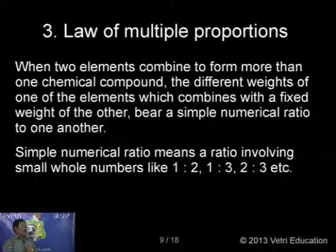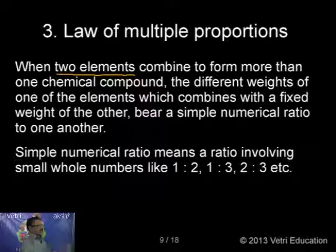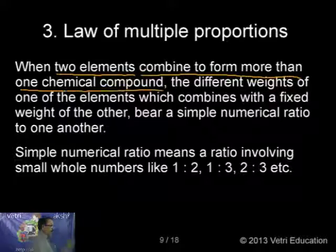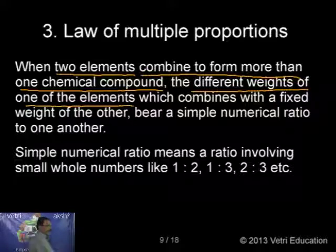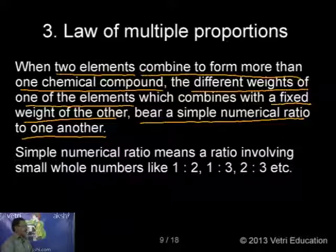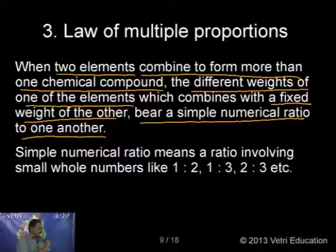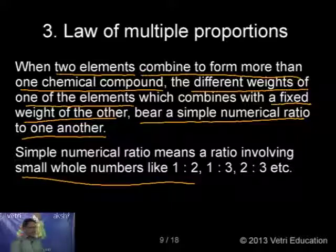The third law is the law of multiple proportions. The statement: when two elements combine to form more than one chemical compound, the different weights of one of the elements which combines with a fixed weight of the other bear a simple numerical ratio to one another. Simple numerical ratio means a ratio involving small whole numbers like 1:2, 1:3, or 2:3.